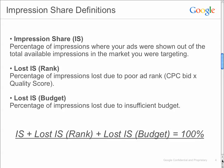Lost Impression Share due to rank, or Lost IS rank, is the percentage of impressions lost due to poor rank, or CPC bid times quality score. Lost Impression Share due to budget is the percentage of impressions lost due to insufficient budget. And in all cases, the Impression Share plus the Lost Impression Share due to rank plus the Lost Impression Share due to budget equals 100%.